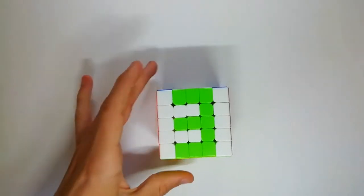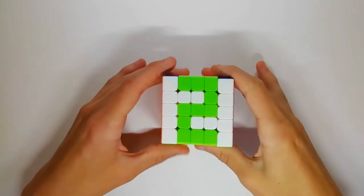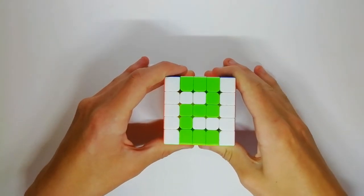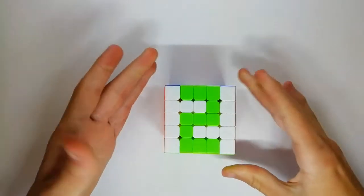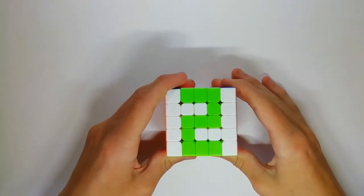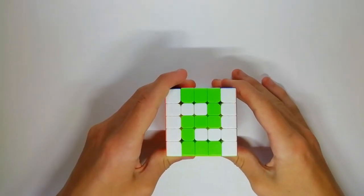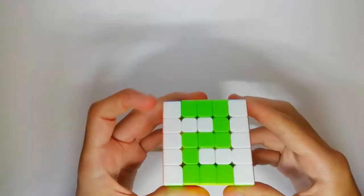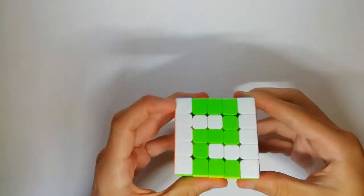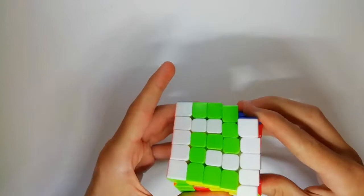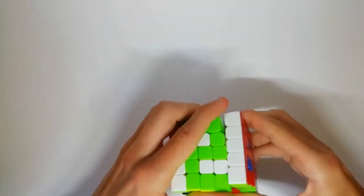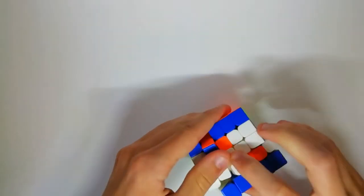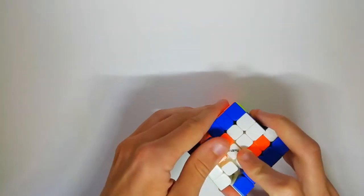In 2nd place we have the Valk 5, which is probably the most stable of the cubes in this top 5 countdown but is also the most expensive at £36. It has the corner cutting you'd expect of a good top quality 5x5 and doesn't... well it can do those weird lock-ups but not as easily as some of the other ones.